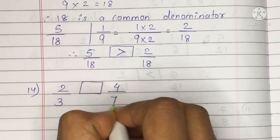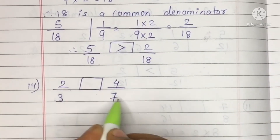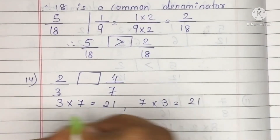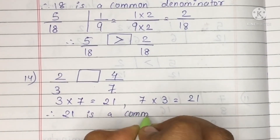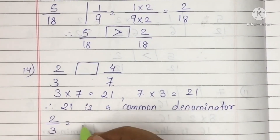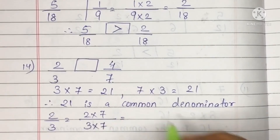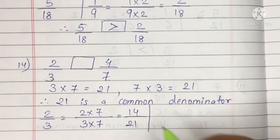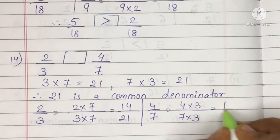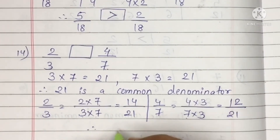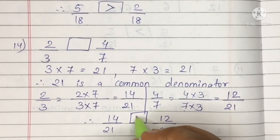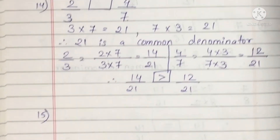Question 14: 2 upon 3 and 4 upon 7. No common denominator or numerator, and 3 and 7 don't appear in each other's tables, so we multiply them: 7 threes are 21 and 3 sevens are 21. Take 21 as common denominator. Multiply 2 upon 3 by 7: 2 sevens are 14, 3 sevens are 21. Multiply 4 upon 7 by 3: 4 threes are 12, 7 threes are 21. Now 14 upon 21 vs 12 upon 21 — 14 is greater.